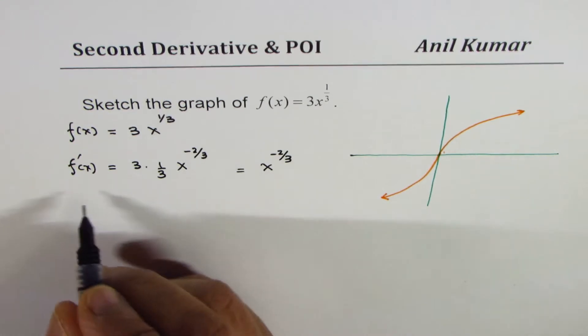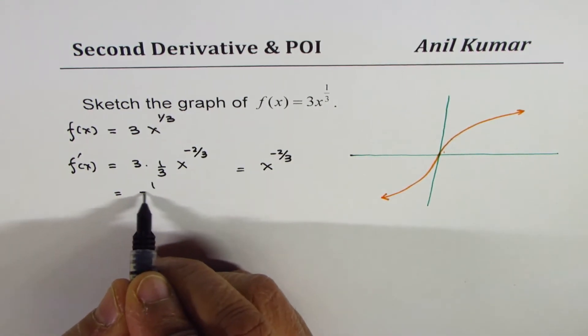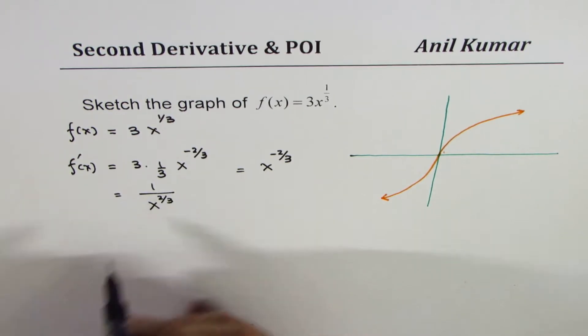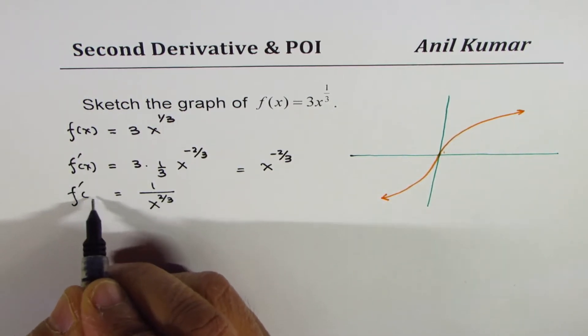So when I write x to the power of minus 2 over 3, what I really mean is that it is 1 over x to the power of 2 over 3. So that is the first derivative.